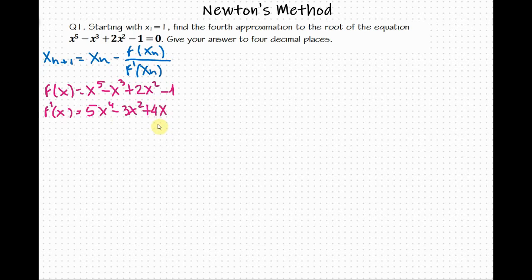From the problem, we have our starting value of x sub 1 equal to 1. The problem asks to find the fourth approximation. So since we have our initial approximation x sub 1, we go and solve the second approximation x sub 2 by using the general formula.